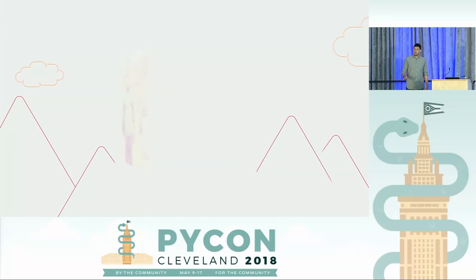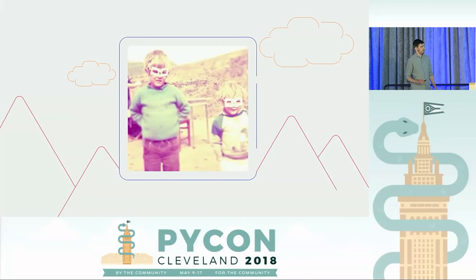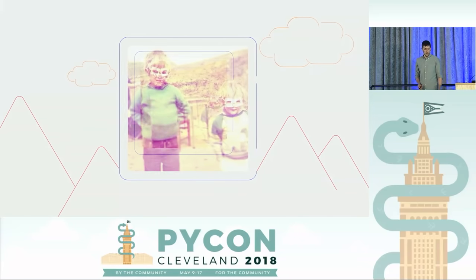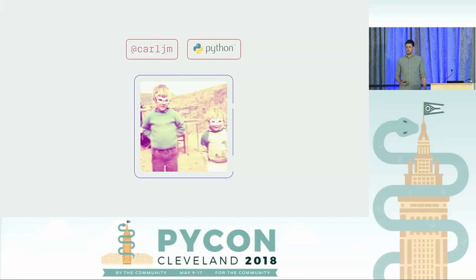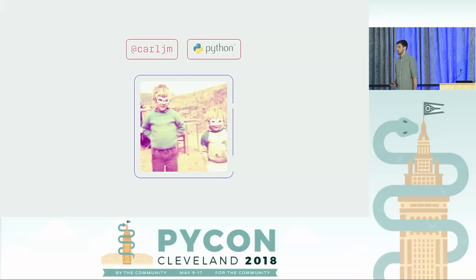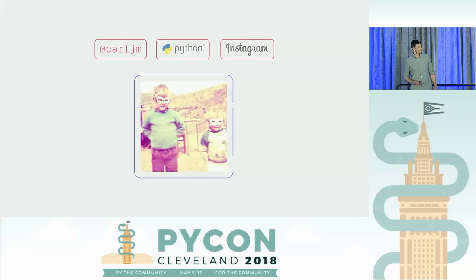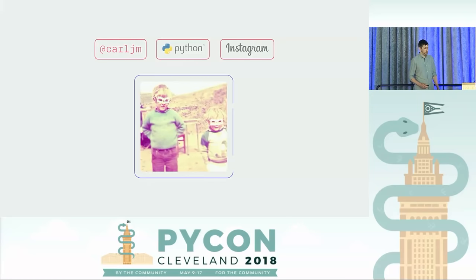I'm Carl JM pretty much everywhere on the Internet. I've been writing Python code since before the turn of the millennium, which makes me officially old. For the last couple of years I've been working at Instagram, most recently on adding type checking and type annotations to our server code base.